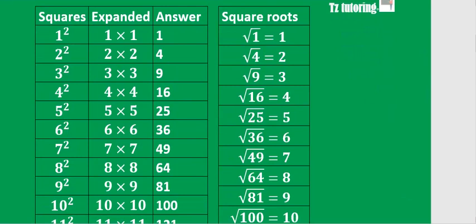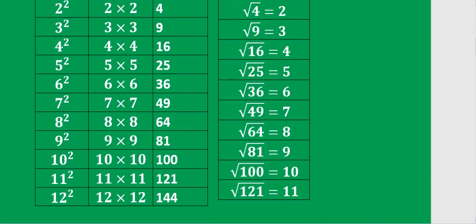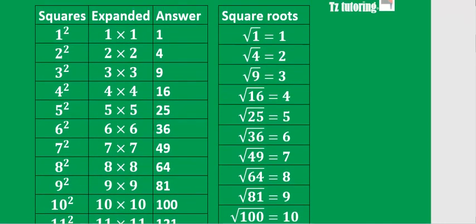A square is just a number multiplied by itself twice. So 1 squared is 1 times 1, which gives you 1. 2 squared is 2 times 2, which gives you 4. 3 squared is 3 times 3, which gives you 9. 4 squared is 4 times 4, which gives you 16, and so forth. You're expected to know your squares up until 12 — so 12 squared is 12 times 12, which gives you 144.